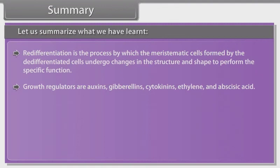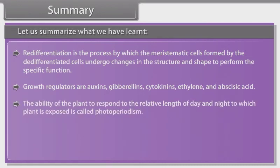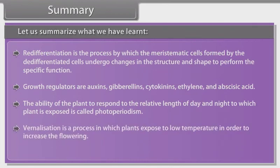Growth regulators are auxins, gibberellins, cytokinins, ethylene and abscisic acid. The ability of the plant to respond to the relative length of day and night to which the plant is exposed is called photoperiodism. Vernalization is a process in which plants are exposed to low temperature in order to increase flowering.